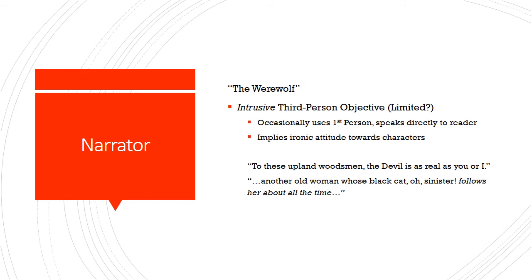But it's an intrusive third-person objective narrator because they occasionally use the first person and speak directly to the reader. For example: 'To these upland woodsmen, the devil is as real as you or I.' So even though they're a third-person narrator outside of the story, they use the occasional first person to intrude on the world of the narrative. They also imply a certain ironic, almost sarcastic attitude towards the characters — for instance, describing how they discover witches, mentioning 'another old woman whose black cat, oh sinister, follows her about all the time.' That interjection and emphasis seem to suggest irony: look at these tiny details that people get so worked up about, thinking this makes the woman a witch.